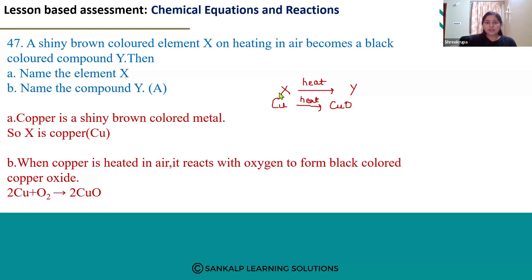That is why X, answer for A, would be copper and B, name the compound Y, that is copper oxide. Copper oxide and element X will be copper.